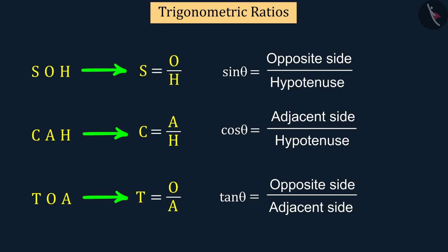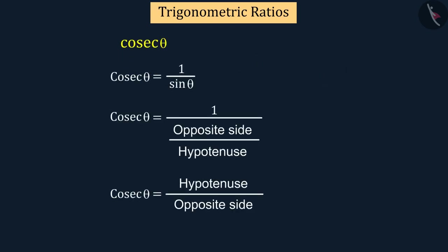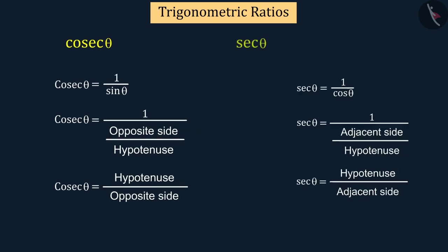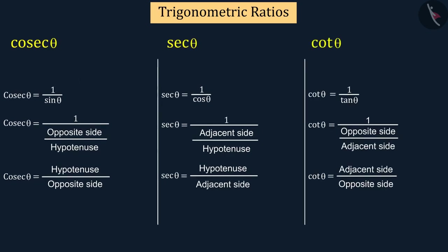With the help of these three trigonometric ratios, you can also find the values of cosec, sec, and cot. Here, cosec is the inverse of sine, that is, the ratio of the hypotenuse and the opposite side. Similarly, sec is the inverse of cos, and cot is the inverse of tan.